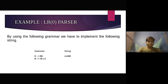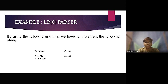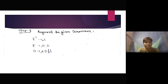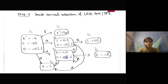By using the following grammar — E produces BB and B produces CB or D — we have to implement the following string, which is CCDD dollar. The first step is to augment the grammar: E' produces dot E, E produces dot BB, and B produces dot CB or dot D. In the second step, we have to draw the canonical collection of LR zero items or DFA.